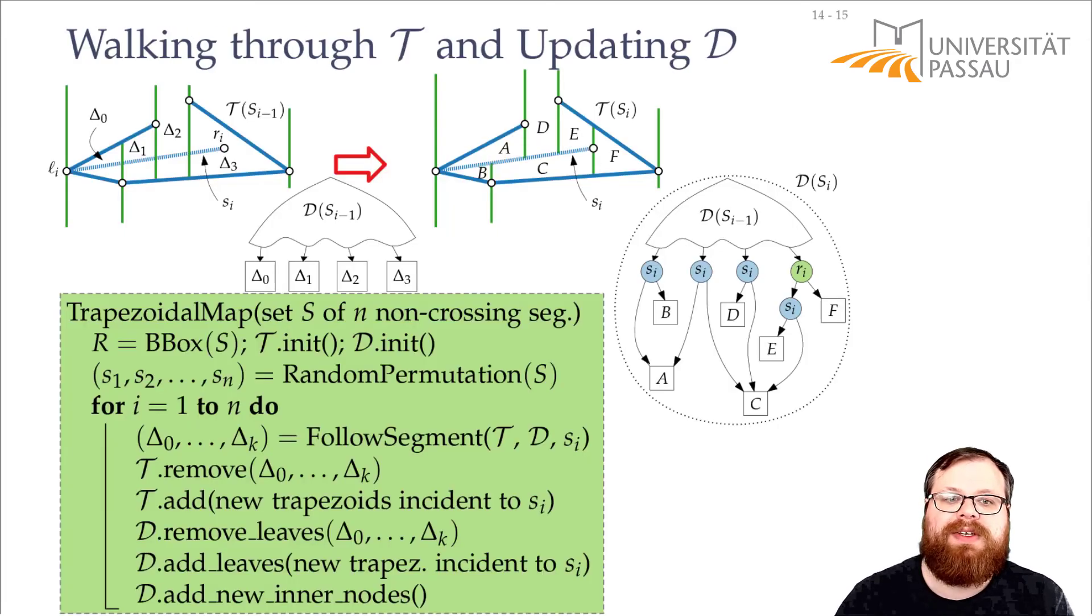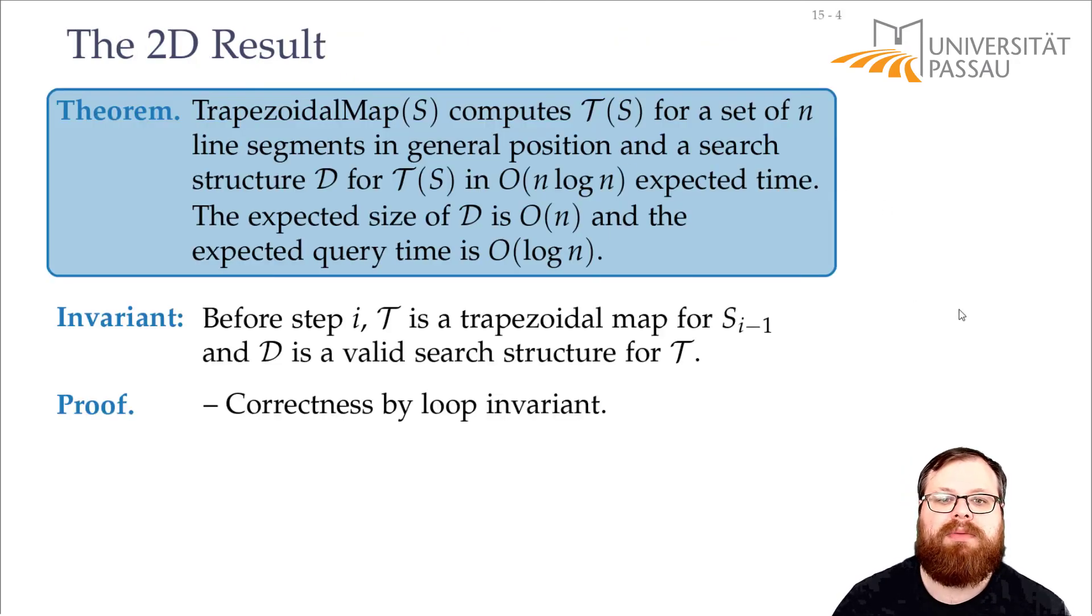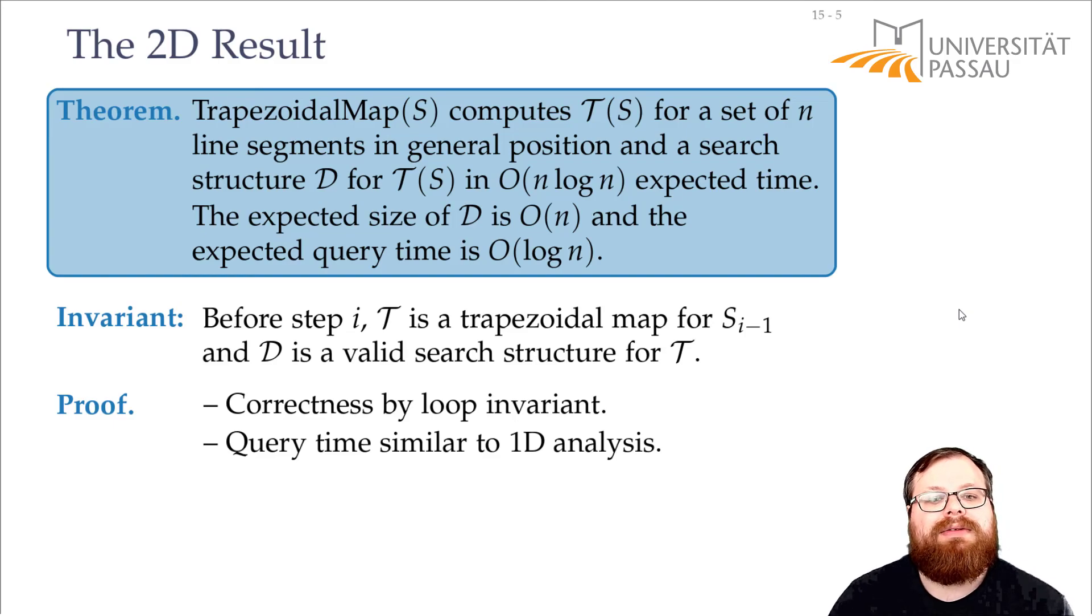And then as long as whatever we do in this step here, we only destroy trapezoids that are intersected by S, and what we do locally here, the changes we do locally, still are valid, then this whole thing is still correct. And that's very easy to show. But the expected running times, they are a bit more tricky.